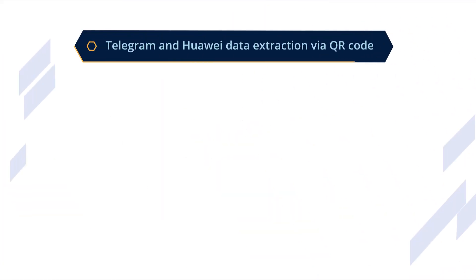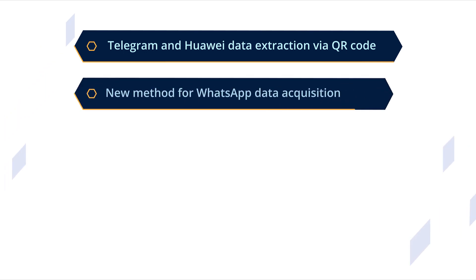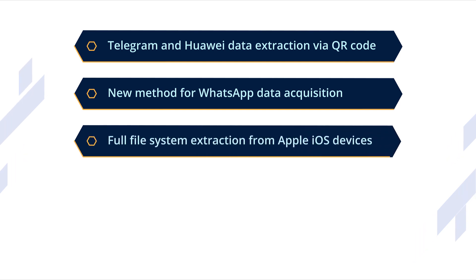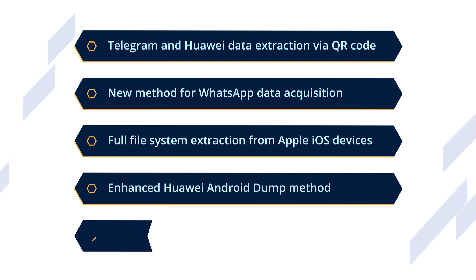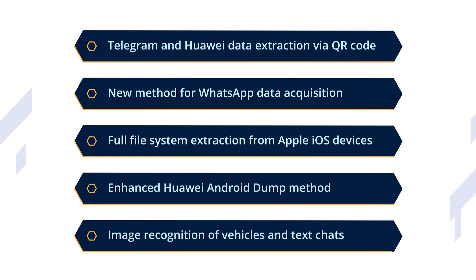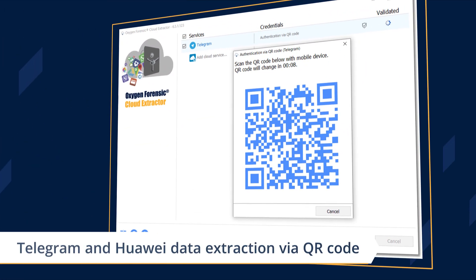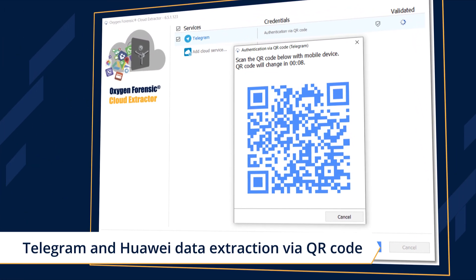With this version, you can access Telegram and Huawei cloud data via QR code, acquire WhatsApp data using a new method, perform full file system extraction from Apple iOS devices, extract more Huawei devices based on Kirin chipsets, and recognize images of vehicles and text chats.